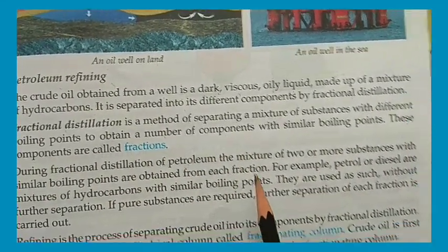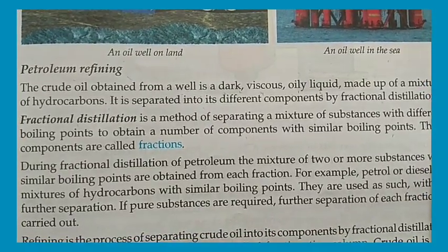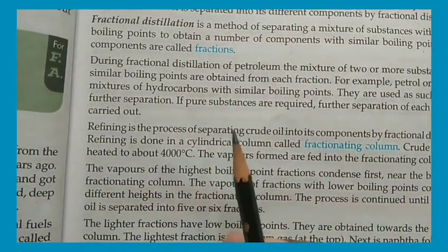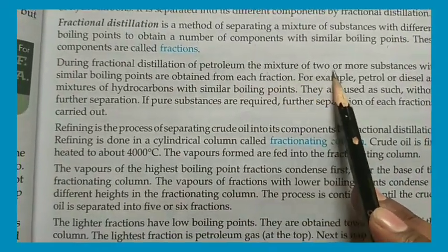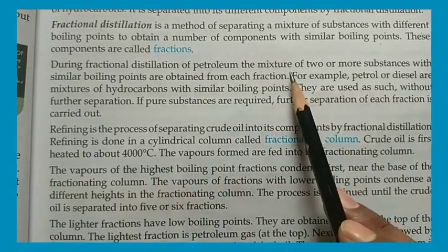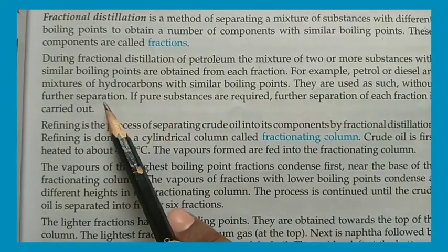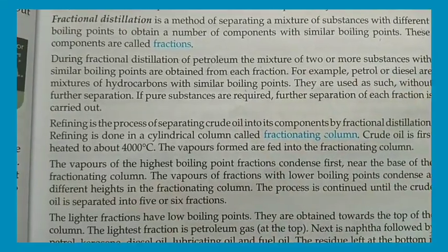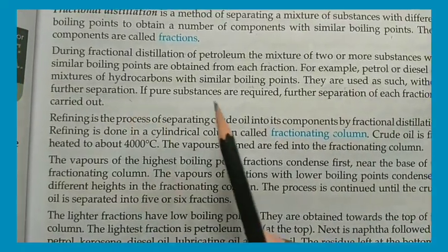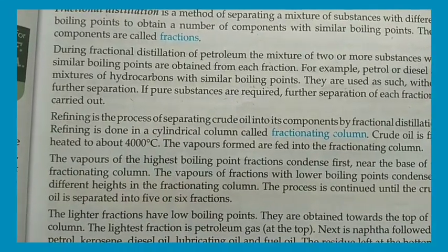The components are separated at different boiling points to obtain different products. These components are called fractions. Petrol and diesel are mixtures of hydrocarbons with similar boiling points, and they are used as such without further separation. If pure substances are required, further separation of each fraction is carried out.